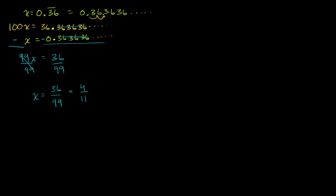Now let's do another interesting one. Let's say we have the number 0.714, and I'll set it equal to x. Notice the 7 is not going to repeat — just the 1 and 4 are going to repeat. So this is 0.714, 14, 14 on and on and on.